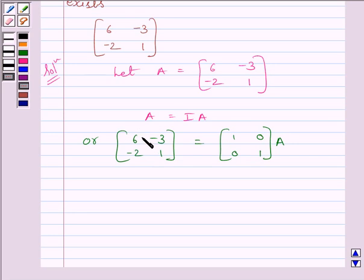Now, to make this element equal to 1, we will apply row operation on R1, 1 upon 6 R1. So, applying on R1 row operation 1 upon 6 R1,